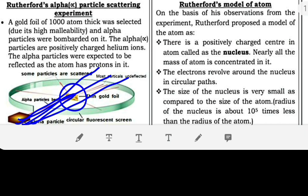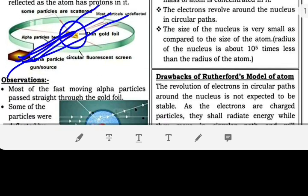Nearly all the mass of atom is concentrated in it. The electrons revolve around the nucleus in circular paths.